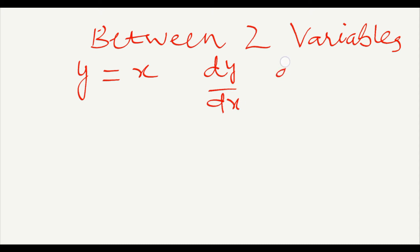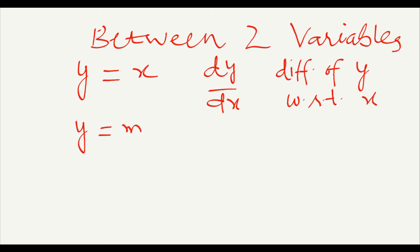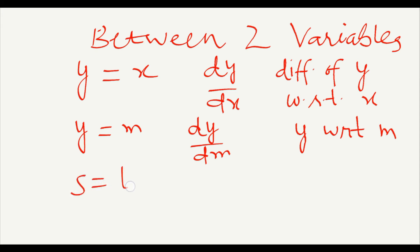Differentiation of y with respect to x. Again, if we write y equals m, we can write the differentiation as dy upon dm, which is differentiation of y with respect to m. Now if we have s equal to t, then we write differentiation of s with respect to t, that is ds upon dt.